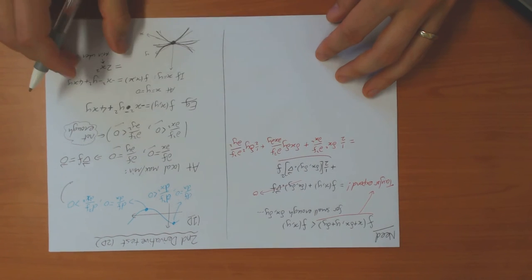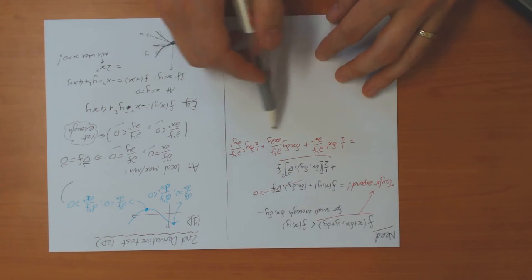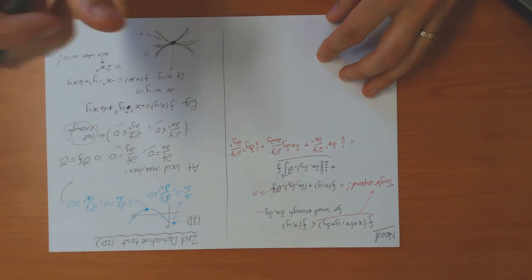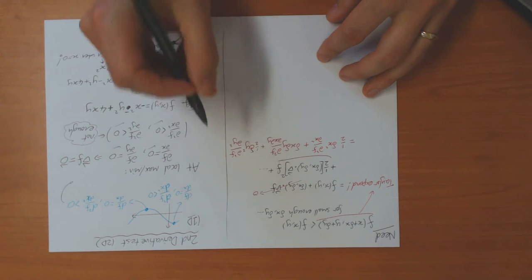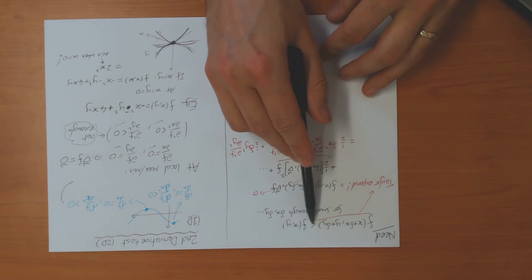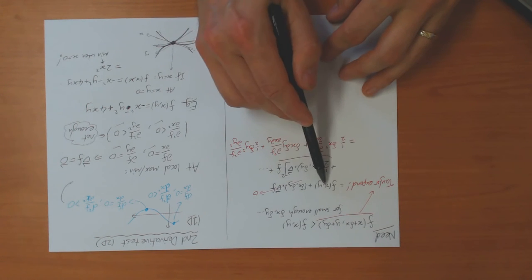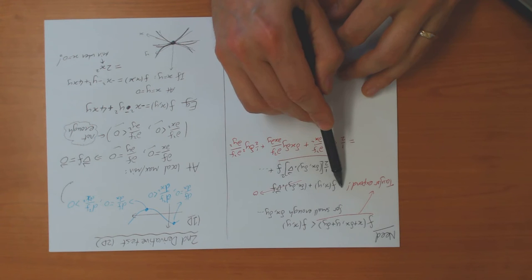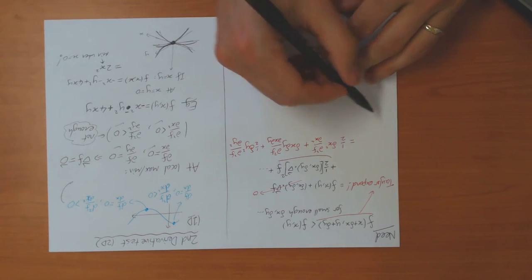If you look at the video on Taylor series, you'll see that we derived this formula for the second-order term. And then there are smaller higher-order terms. For a maximum we need this to be less than f(x, y), and since we have f(x, y) on both sides, the second-order term must be negative.